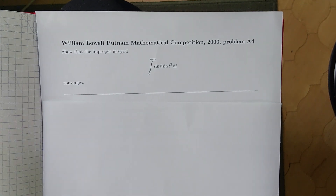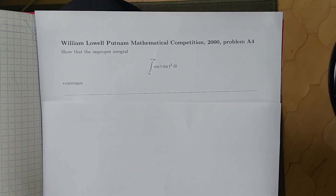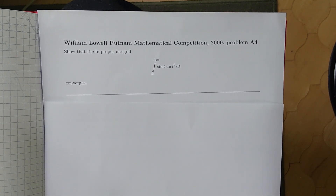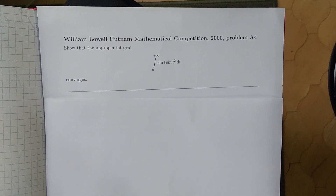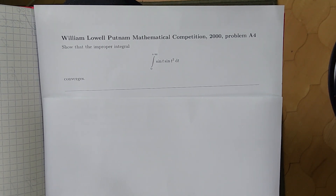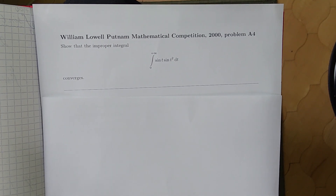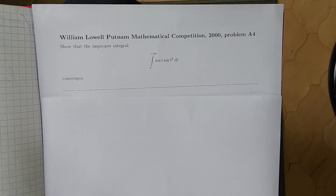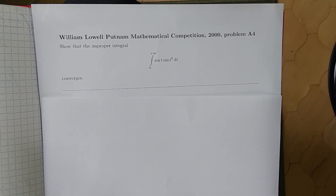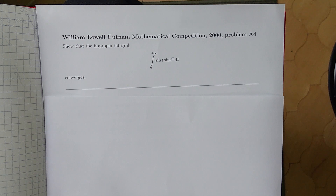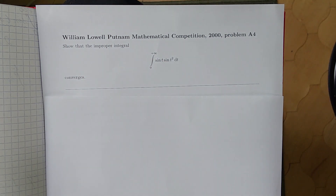Hello friends. In this video I'd like to solve the following problem from the William Lowell Putnam Mathematical Competition, year 2000, problem A4. We wish to solve the following improper integral from 0 to infinity of sine of t times sine of t squared dt, and show that this integral converges.